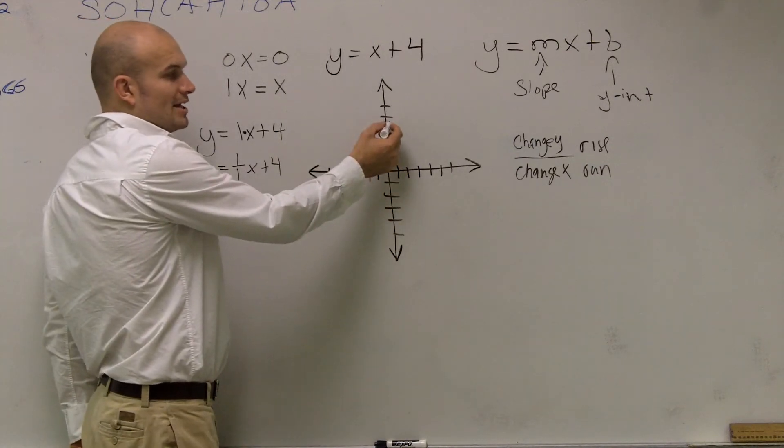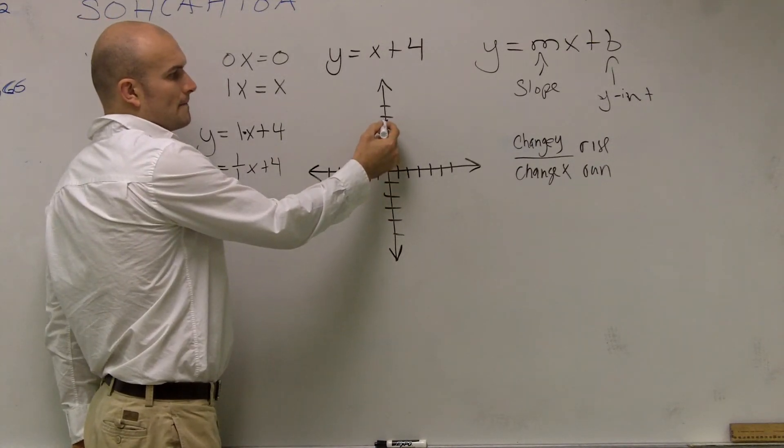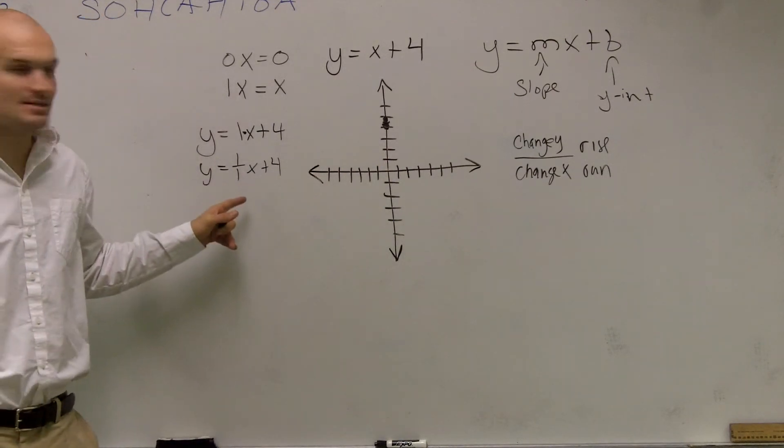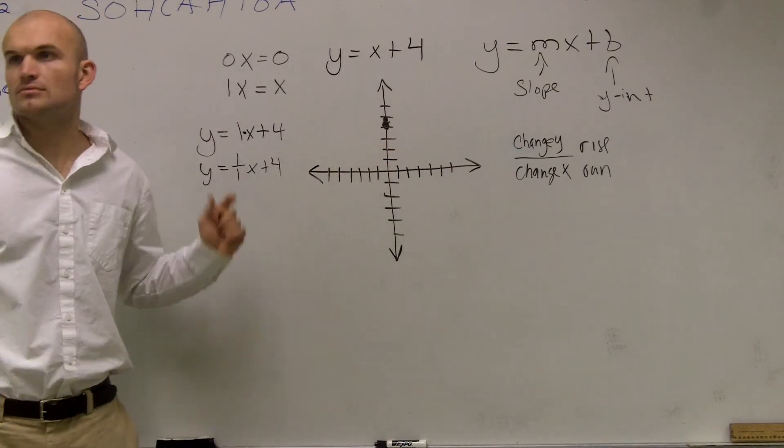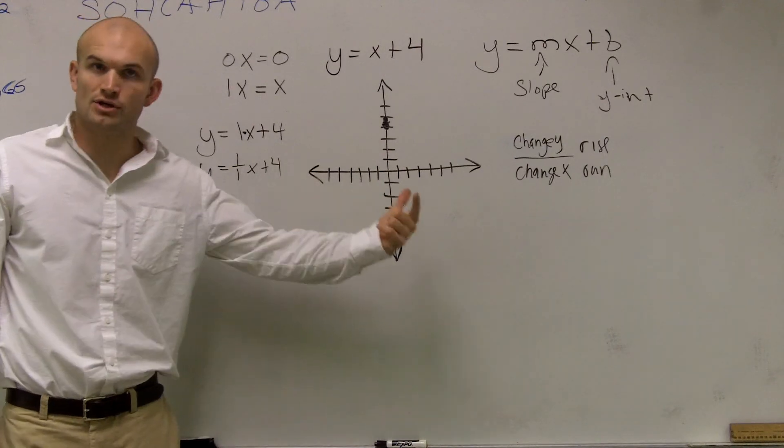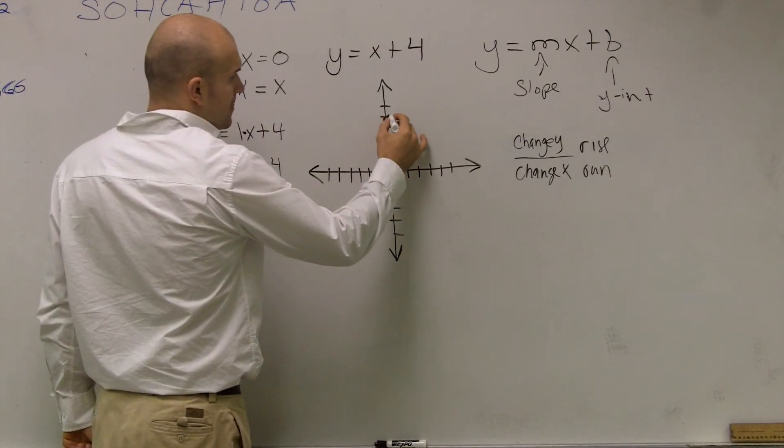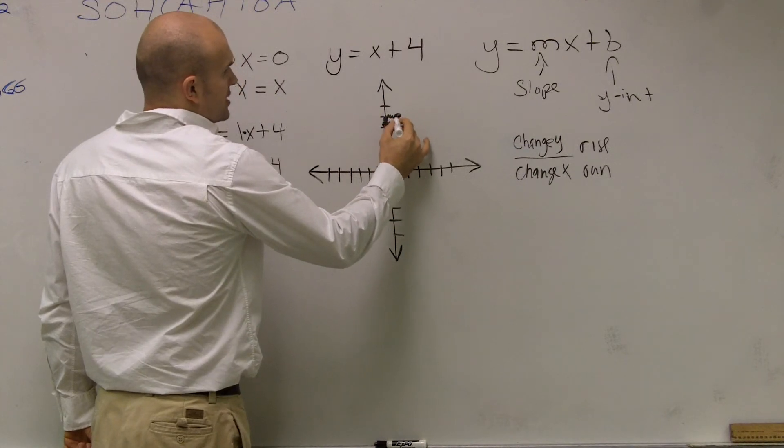Up. So, you go from your y-intercept, go up 1. Then, my change in my x is 1 as well. What direction do you think positive 1 is going to go, to the right or the left? Right. So, you go over 1 to the right. And you have another point.